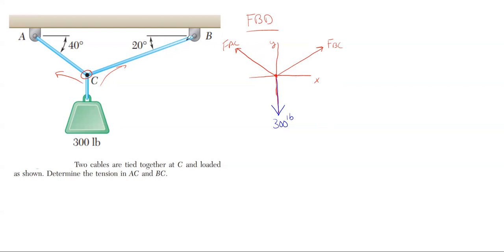BC is 20 degrees off the horizontal, so we are 20 degrees off the x-axis. AC is 40 degrees off the horizontal, so that angle is 40 degrees here.